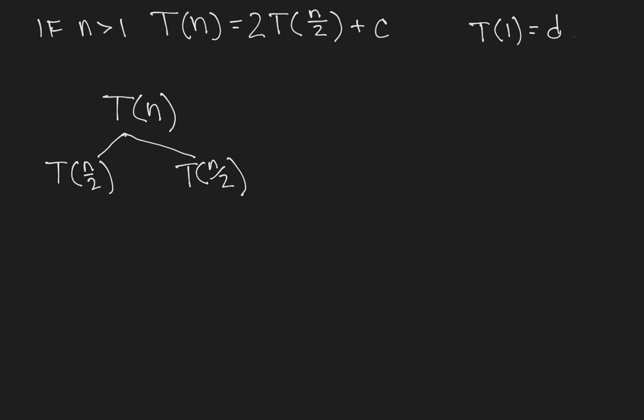But also we need to replace this with c. So now what we've got is 2t of n over 2 plus c.